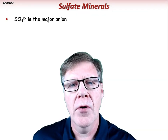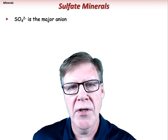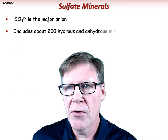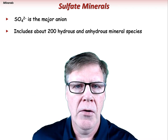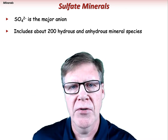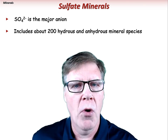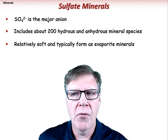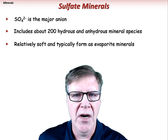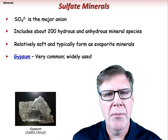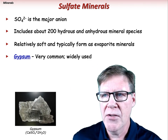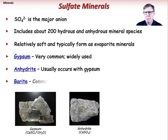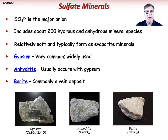Sulfates are minerals with SO4 as the major anion, which commonly bonds with plus-two valence cations like calcium, magnesium, and barium. There are about 200 hydrous and anhydrous mineral species. Sulfates are relatively soft and typically form as evaporite minerals in sedimentary environments. Gypsum is a very common calcium sulfate with many constructive uses. Anhydrite is the anhydrous version of gypsum. Barite, or barium sulfate, commonly occurs as a vein deposit.